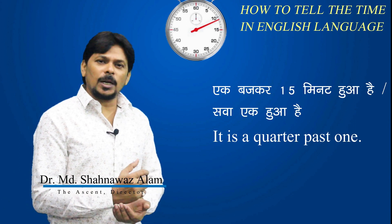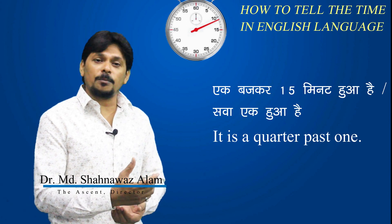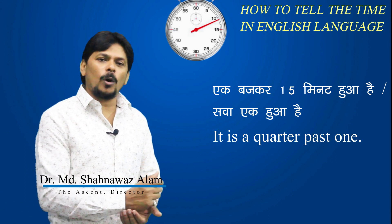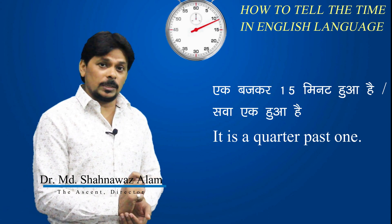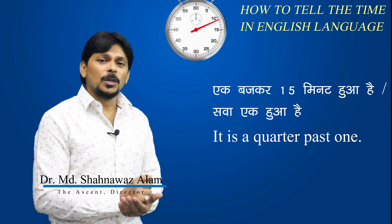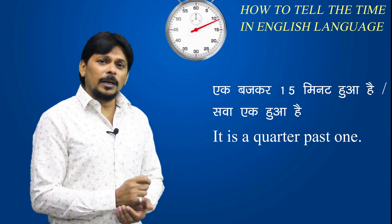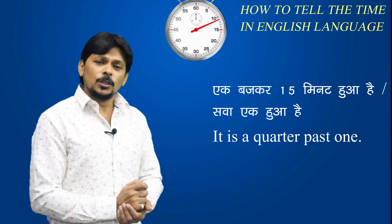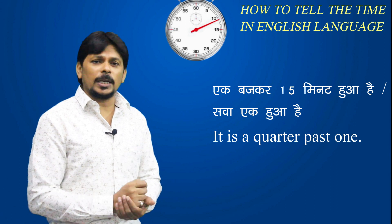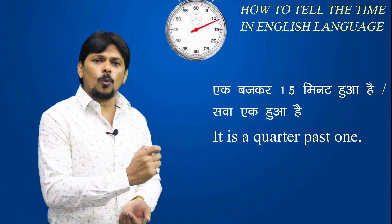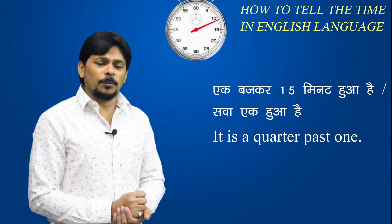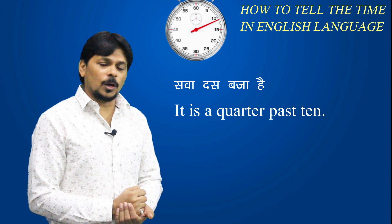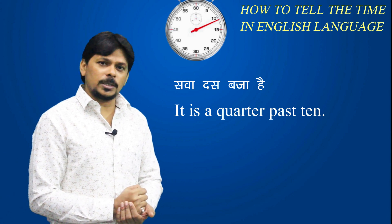When it is one hour and fifteen minutes — एक बजकर पंद्रह मिनट हुआ है, or सवा एक बजा है — it is a quarter past one. You cannot say 'it is fifteen past one.' You can't say that. So it is better to say it is a quarter past one. Similarly, सवा दस बजा है — it is a quarter past ten.